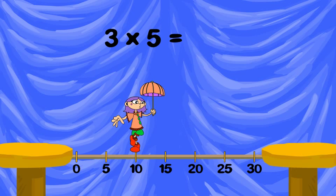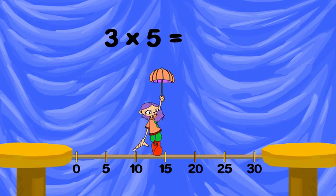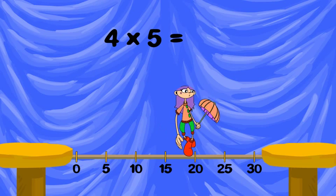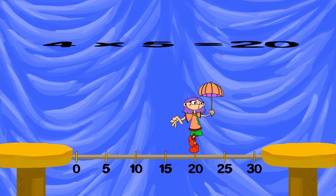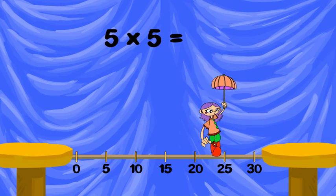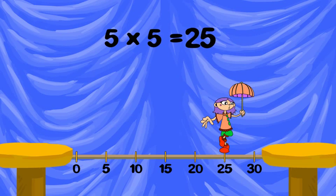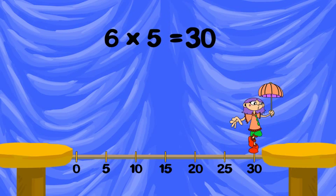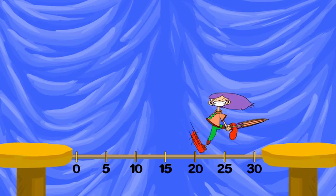Three groups of five is fifteen. Four groups of five is twenty. Five groups of five is twenty-five. Six groups of five is thirty. You're on your way to knowing your five times facts!